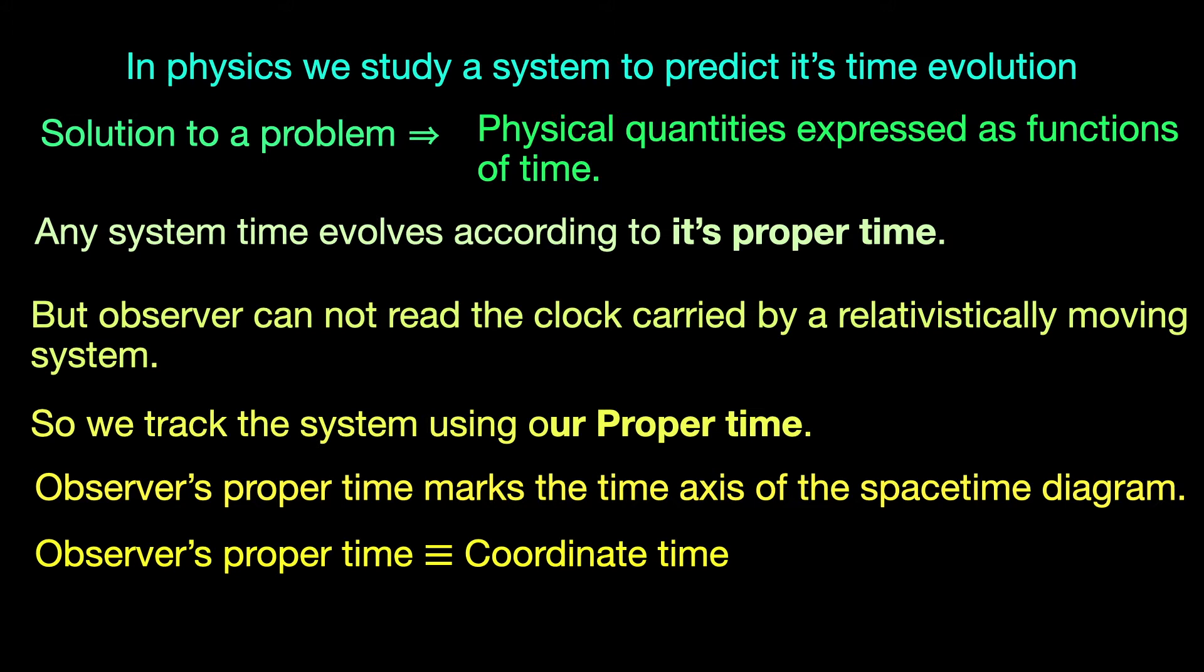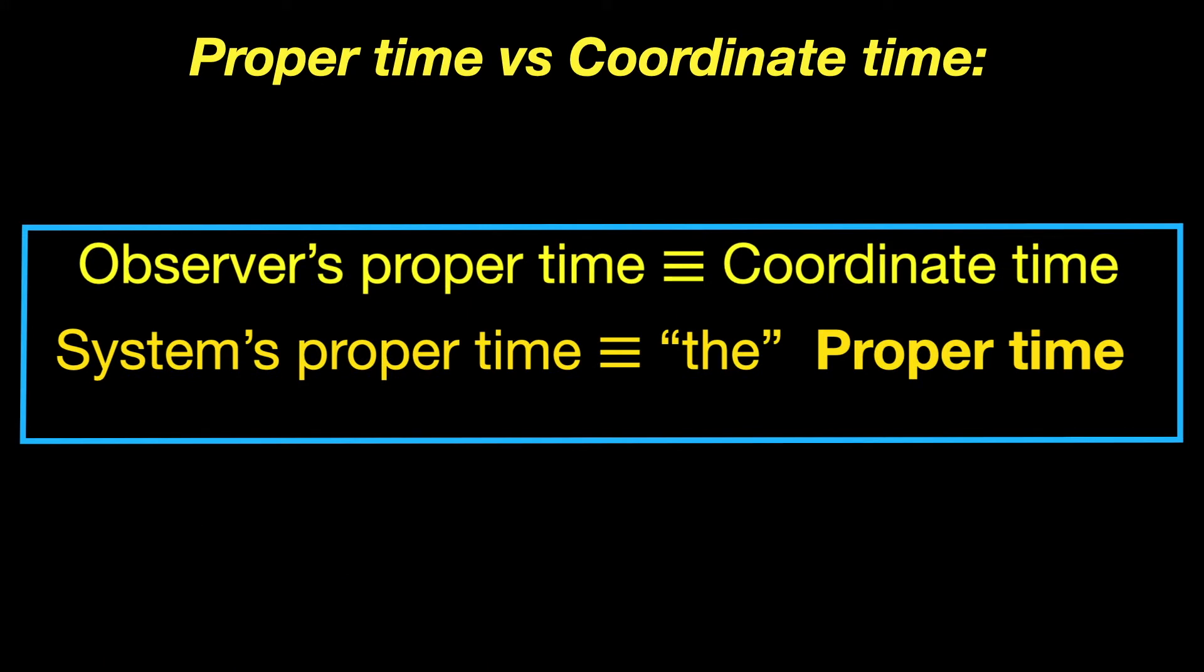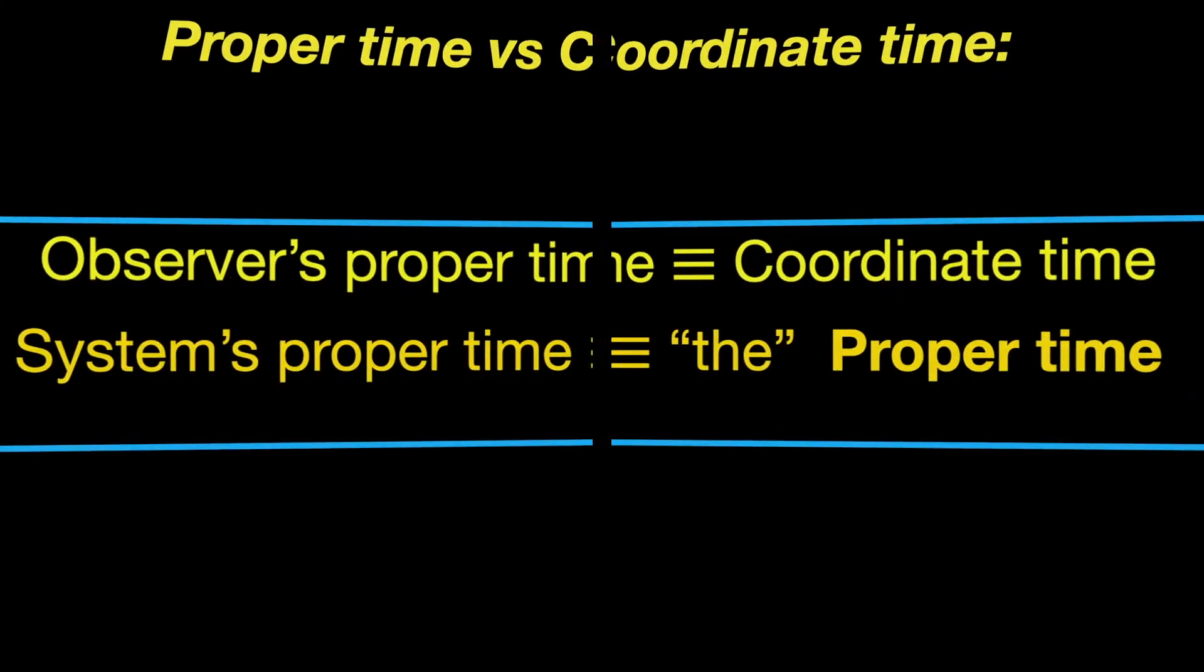The other time of concern is shown by the rest frame clock of the system under observation. It is the system's proper time which dictates its time evolution. We refer to it as the proper time. Since we mostly cannot or do not observe the system's proper time, we have to somehow calculate it. But that can be done quite easily because we know exactly how the time readings shown by the system's rest frame clock is related to our coordinate time. Here is how.